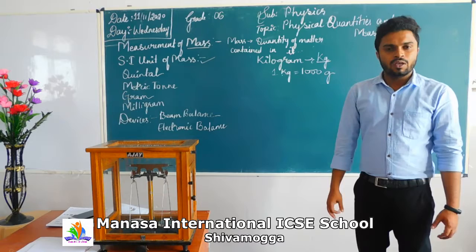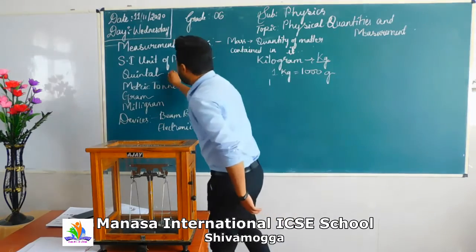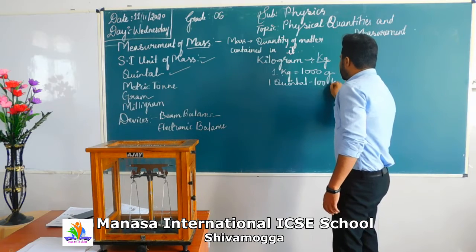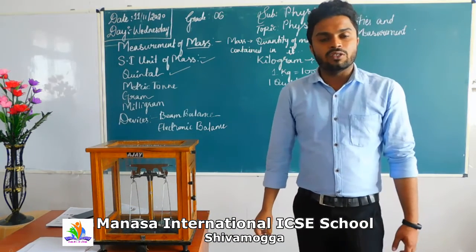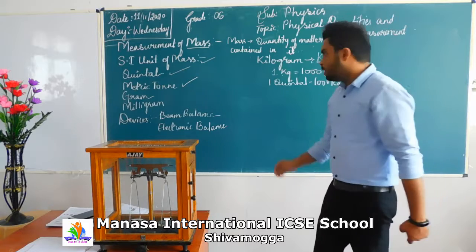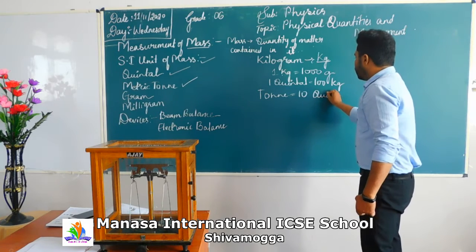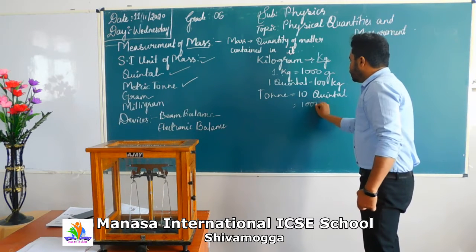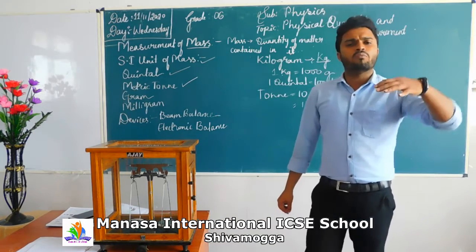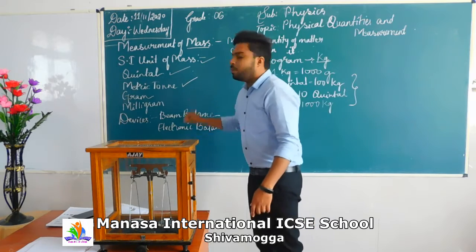One kg is equal to 1000 grams. If you go for much bigger units, much bigger mass is measured in quintal. One quintal is equal to 100 kg. Then, much bigger than this is the metric ton. One ton is equal to 10 quintals, that is nothing but 1000 kg. These are the bigger units used to represent mass.